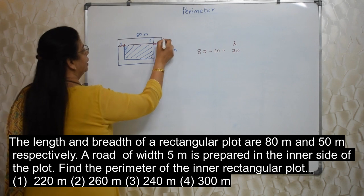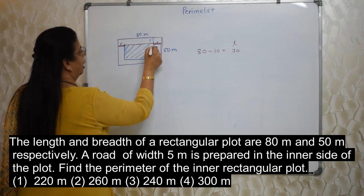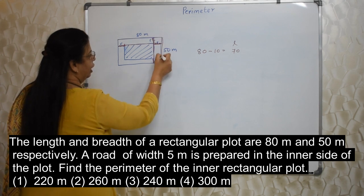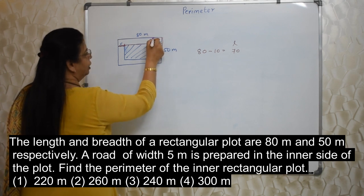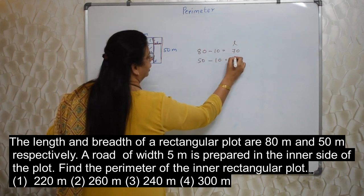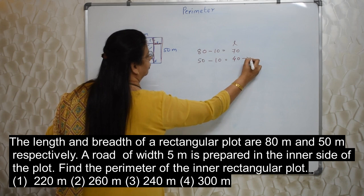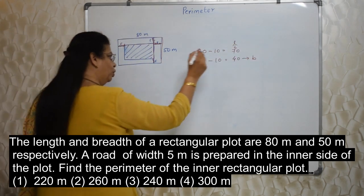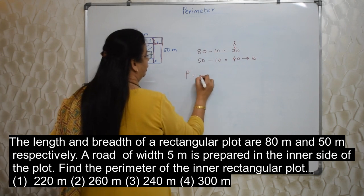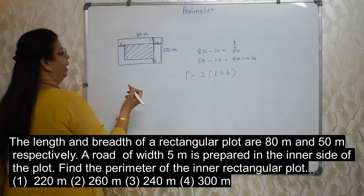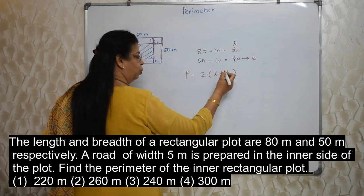Similarly, this is the breadth of the bigger rectangle. And this is the breadth of the smaller rectangle. What is not there? This portion 5 and this portion 5. So, from this entire 50, I have to reduce this 5 and this 5. So, 50 minus 10. That is 40. This is the breadth. This is the length. Right? Once we know this, finding of perimeter is not a big thing at all. If we know the formula of a rectangle, perimeter of a rectangle. 2 times length plus 2 times breadth.